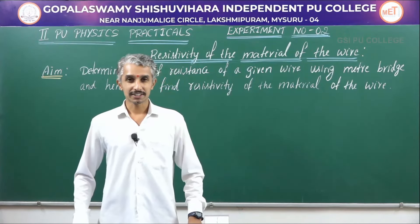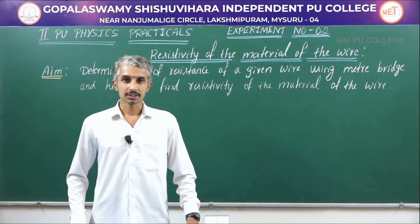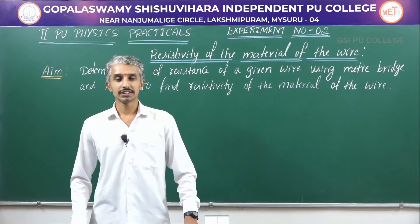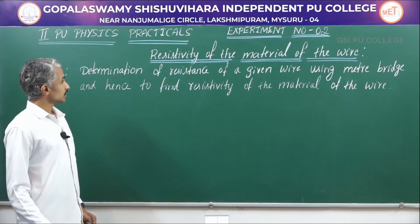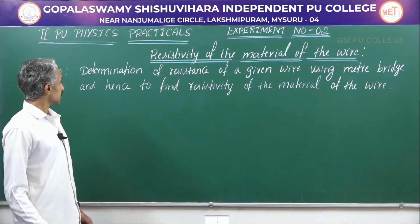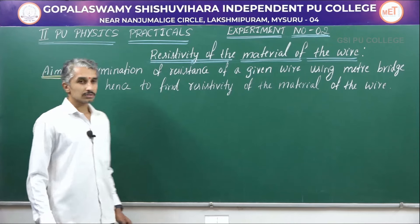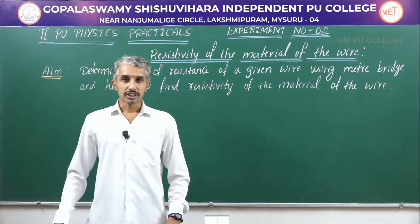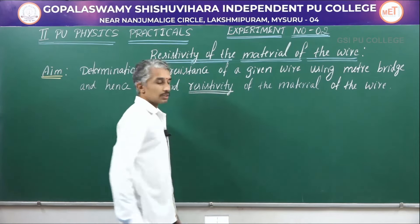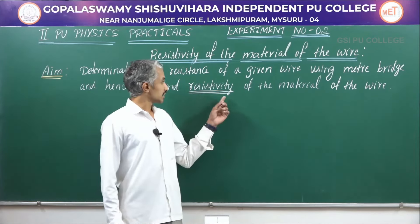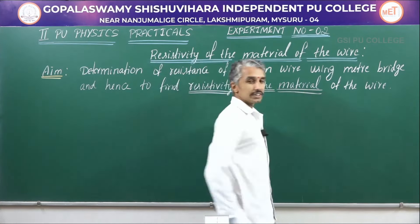Hello everyone, welcome to the online practical sessions. Today we will be looking into experiment 2 of second PUC, which is resistivity of the material of the wire. Our aim today would be determination of resistance of a given wire using a meter bridge and hence to find the resistivity of the material of the wire. The ultimate aim would be to find the resistivity, and we will have to understand the term resistivity of the material of the wire.